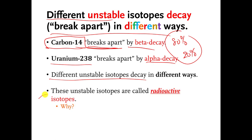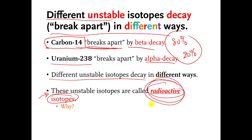In case this was not clear, these unstable isotopes are called radioactive isotopes. In other words, everything that we've been talking about when it decays — those are radioactive materials. Why are they called radioactive materials? Well, if you look back at all those videos, there was always some piece of the atom that was getting fired off into the distance. So we say those unstable isotopes radiate parts of the atom. That's basically one of the reasons why they're called radioactive.